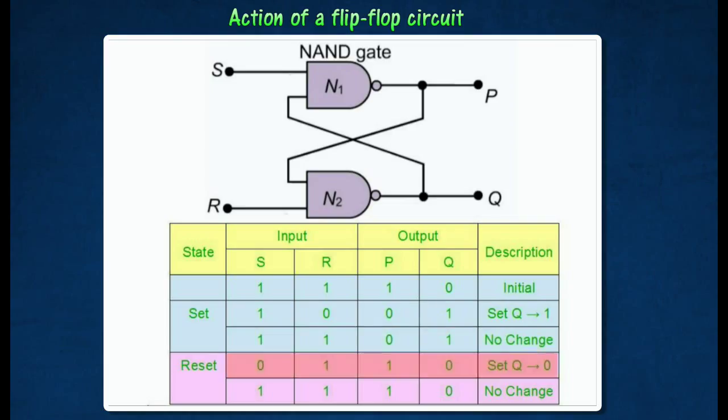At the flop state, inputs S and R change their logic to 0 and 1 respectively. However, the outputs repeat their initial states. For example, P and Q are at logic 1 and 0 respectively.